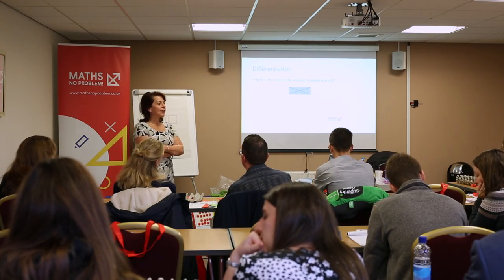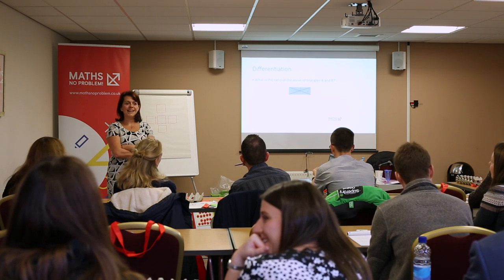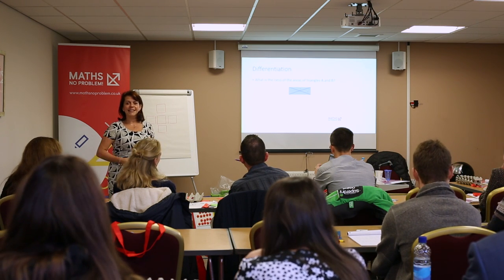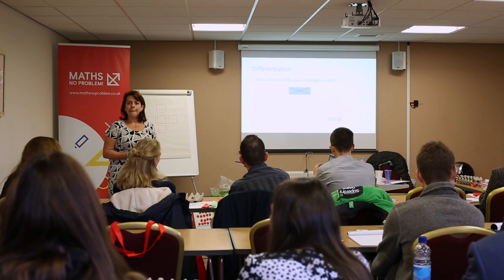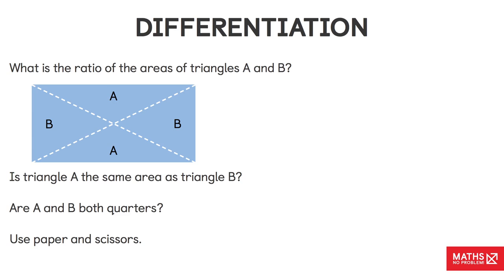That's your mission. Anybody got an answer and a proof? You cut it up — so what did you decide the ratio of the areas is? The same, so it's one to one. The area of triangle A is exactly the same as the area of triangle B.